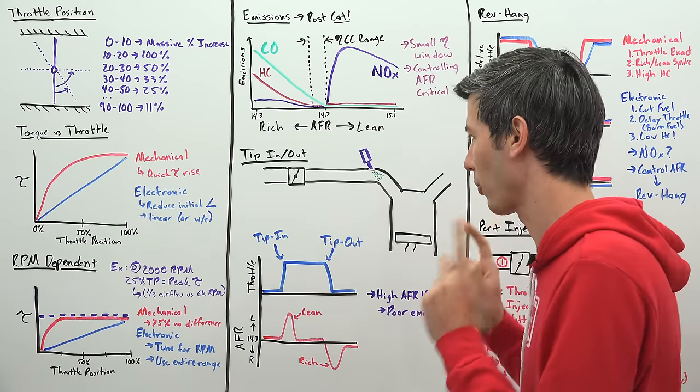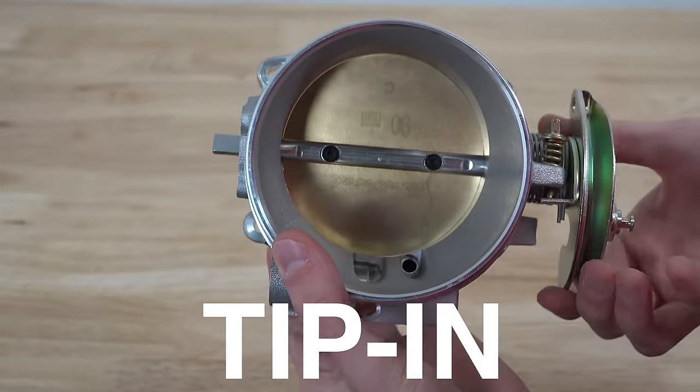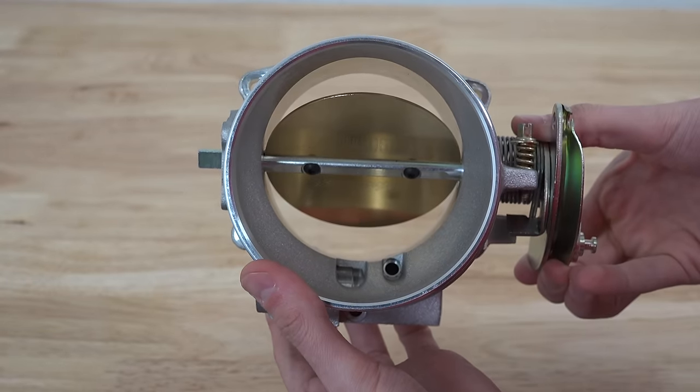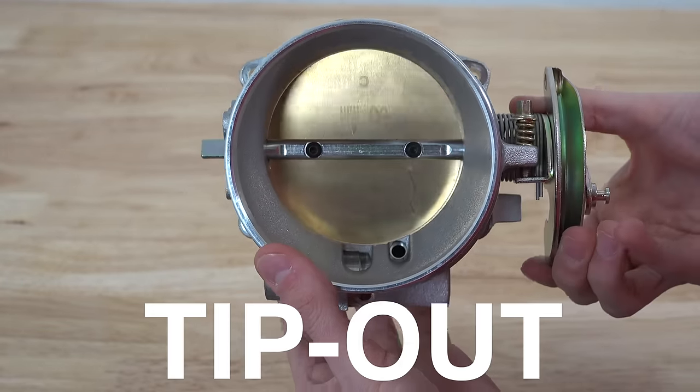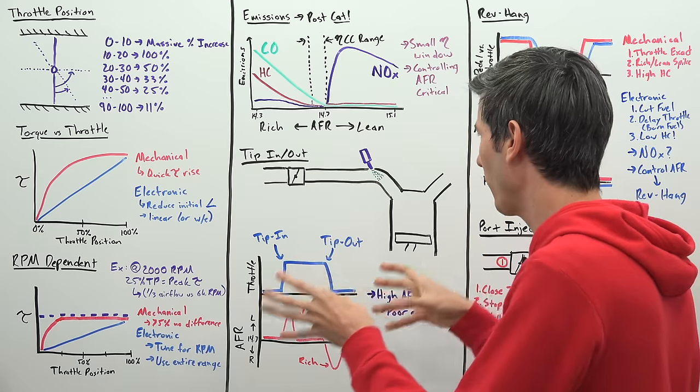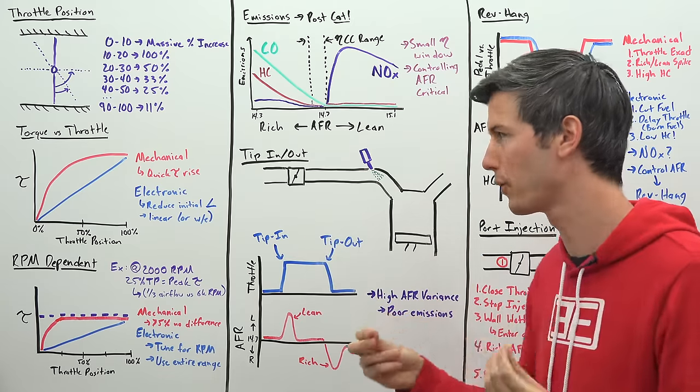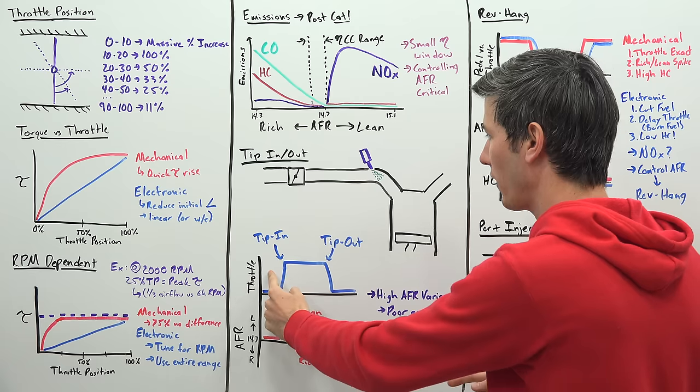So what's the scenario where it is difficult to control that air fuel ratio? Well, throttle tip in and throttle tip out. So tip in is when your throttle is closed and then you open it very quickly. Tip out is when that throttle is open and then you close it very quickly. And so if you look at what's going on in an engine in these scenarios, you can see why that air fuel ratio changes.